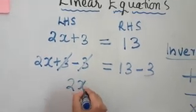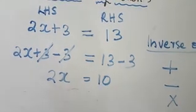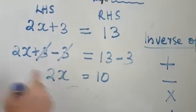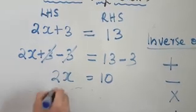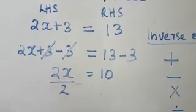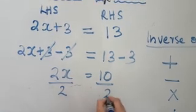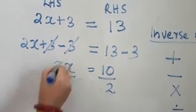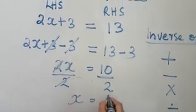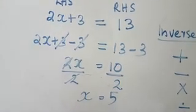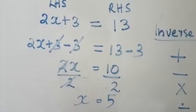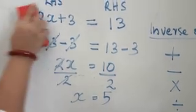2x = 13 - 3, which is 10. Now this 2 is multiplied with x, so we can eliminate that 2 by dividing by 2. On the RHS also divided by 2. 2 and 2 will get cancelled. x = 10/2, which is 5. So we found the solution: x = 5. Let's see one more example.